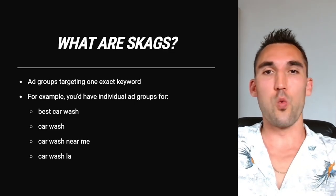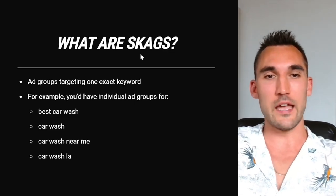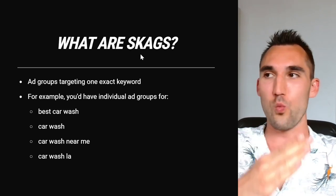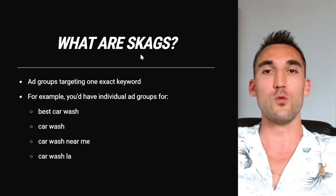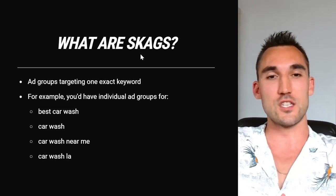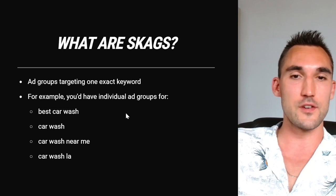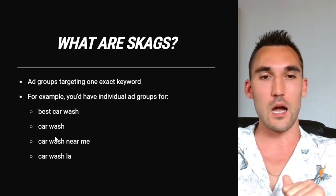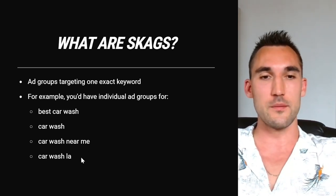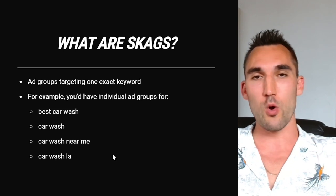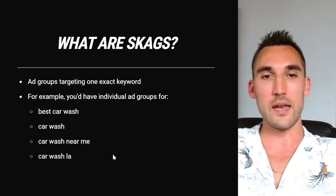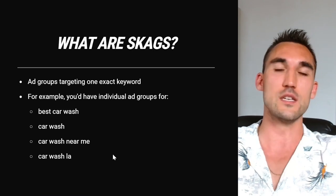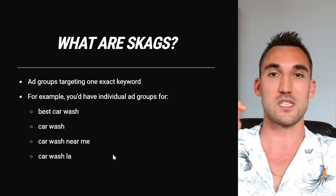So firstly, what are SKAGs or single keyword ad groups? Basically, these are ad groups that target only one specific keyword in Google Ads. For instance, you would have an individual ad group for each keyword — like 'best car wash,' 'car wash,' 'car wash near me,' and 'car wash LA' — instead of all being in one ad group, each would be in its own individual ad group targeting only that specific keyword.